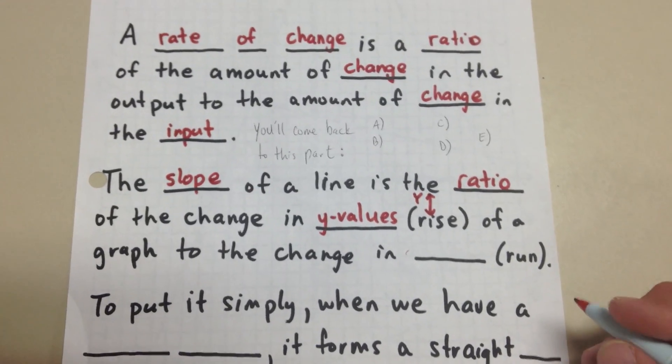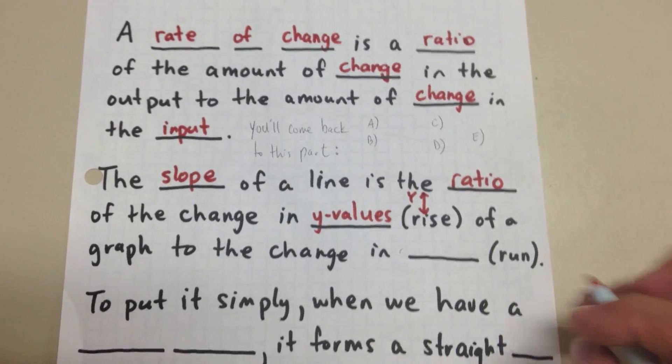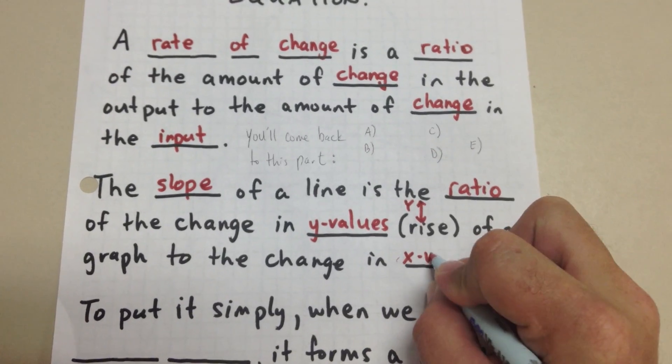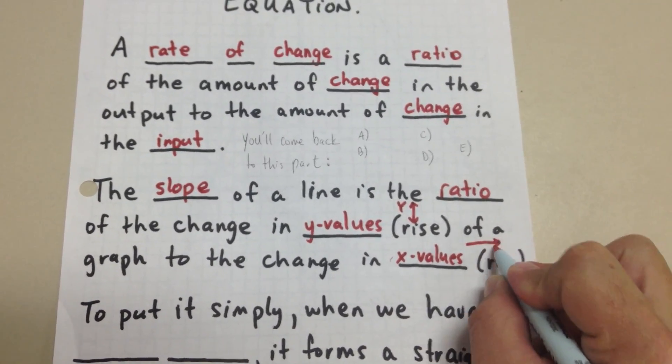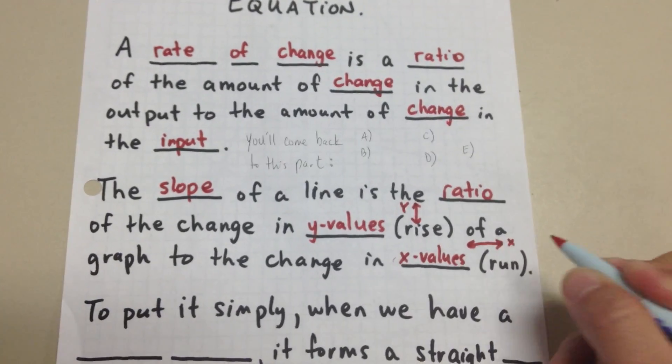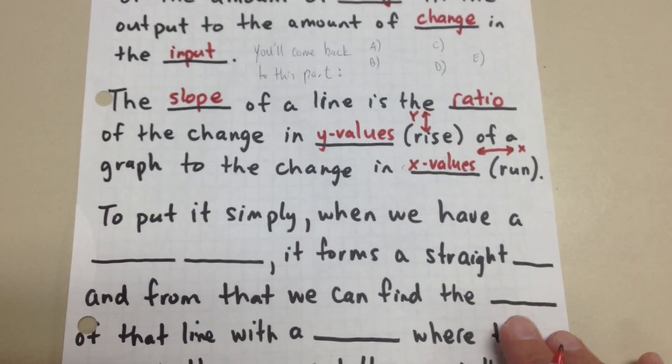So it's the ratio of the change in the y-values of a graph to the change in the x-values. I'm going to talk about our x-axis. That's the one that goes like this. And to put it simply, when we have a linear equation, it forms a straight line.